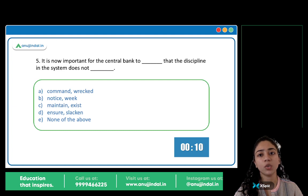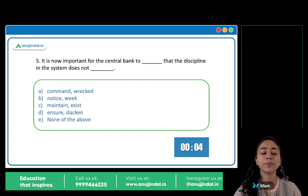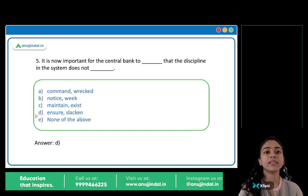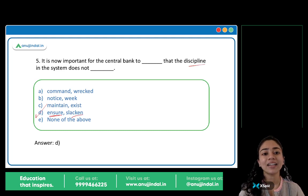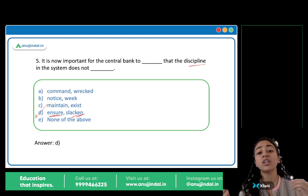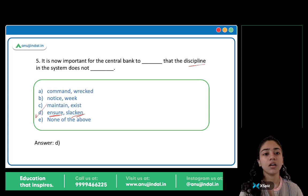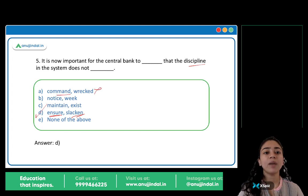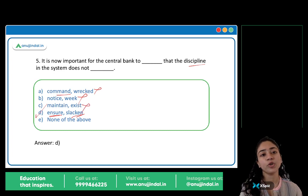It is now important for the central bank to blank that the discipline in the system does not blank. The correct answer is option D: Ensure and slacken. The central bank must ensure — make sure — that the discipline in the system does not slacken, does not slow down, weaken, or diminish. The other options — command/bracket, notice/weak, maintain/exist — are all incorrect.